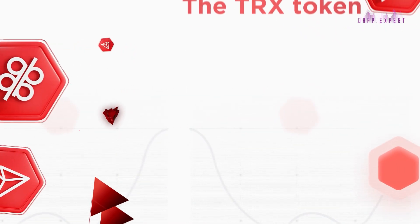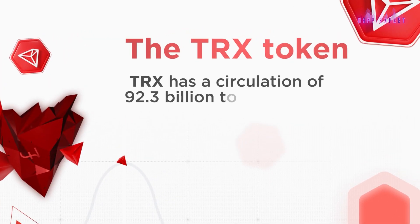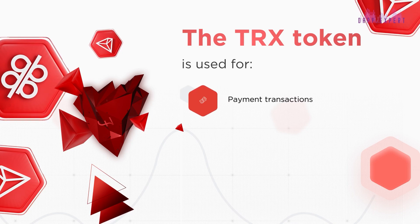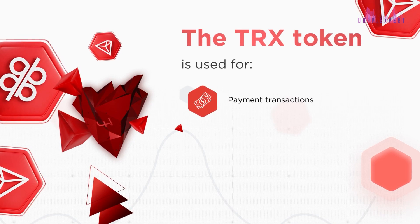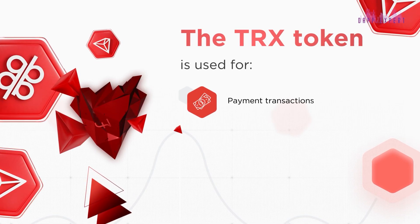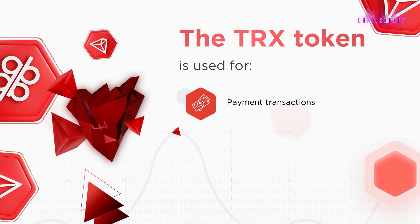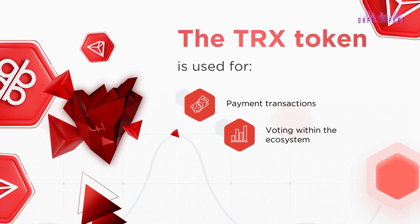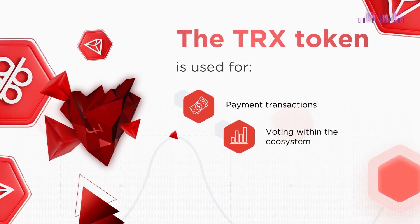TRX Token: TRX has a circulation of 92.3 billion tokens. It is used for payments for transactions on the Tron blockchain. Payment for transactions occurs not only when sending TRX, but also for paying for transactions of other tokens and stablecoins. With the help of TRX, you can vote within the ecosystem. To do this, you need to have a certain amount of coins in your wallet.